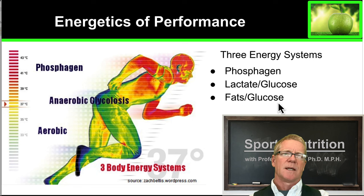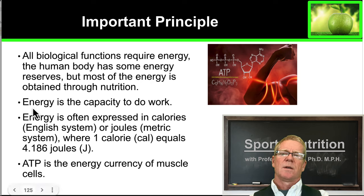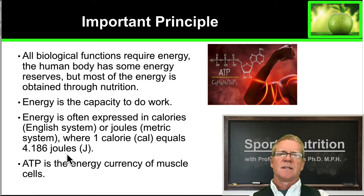So it's an important principle: most of the energy from our body is obtained through nutrition, and the energy that we use or generate gives us the capacity to do mechanical work — that's work with our muscles. It is generally expressed either as joules or as calories. One calorie is equal to 4.186 joules.